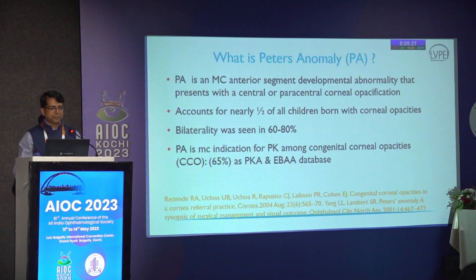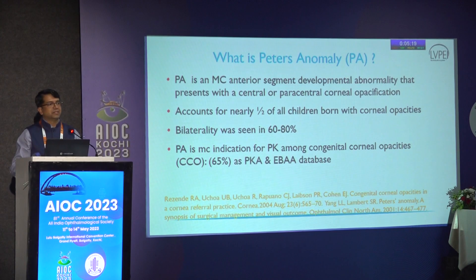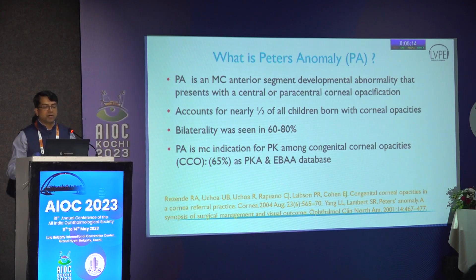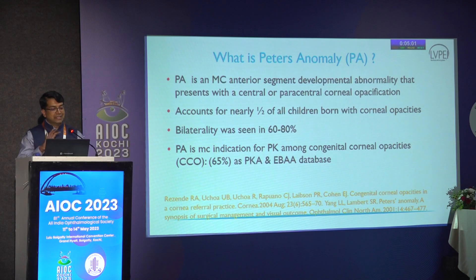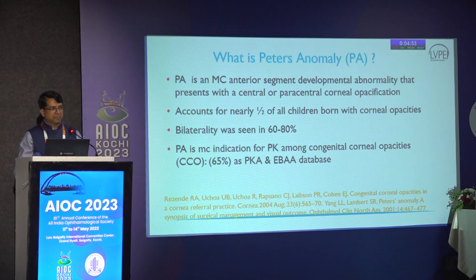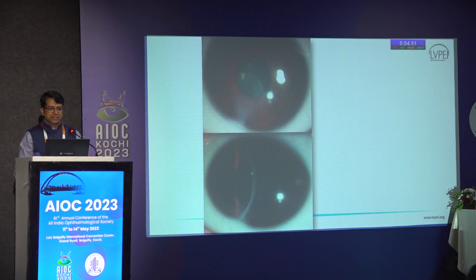I have no financial disclosures. Peters anomaly is one of the most common anterior segment developmental abnormalities, presenting with central or paracentral corneal opacification. It accounts for nearly 50 percent of children born with corneal opacity, and two-thirds of cases are bilateral. Looking at 30 years of LBPI data as well as American Eye Bank Association data, nearly 65 percent of all penetrating keratoplasties in the last 40 years were done exclusively for Peters anomaly.